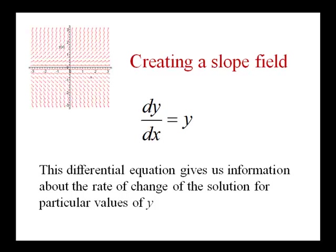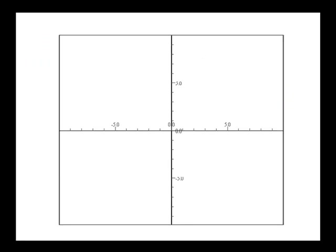Now this differential equation gives us information about the rate of change of the solution for particular values of y. So what we'll do is we'll start with an empty graph, and we'll pick a point, or a couple of points, and we'll calculate the slope at those points.